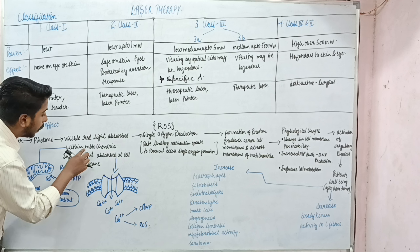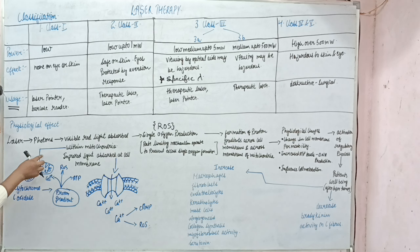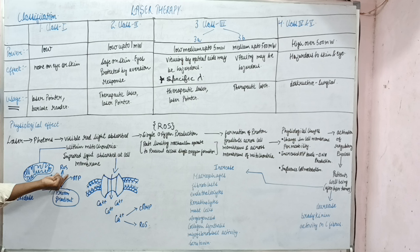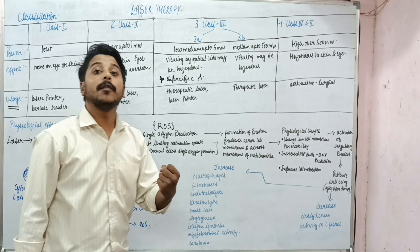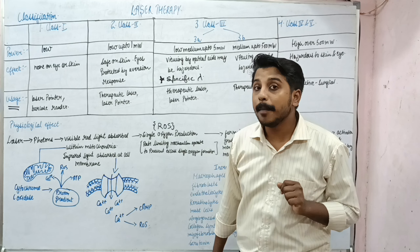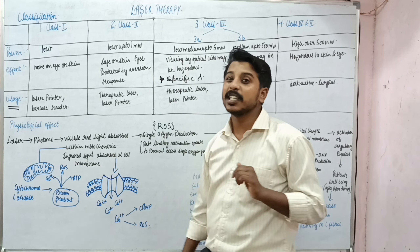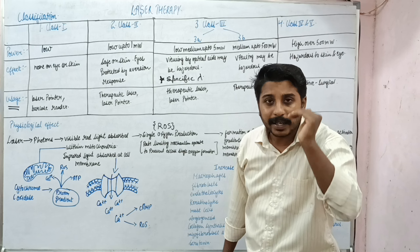Visible red light is absorbed within the mitochondria — it enters our body cells and particularly enters the mitochondria. Mitochondria have cytochrome c oxidase, which forms a proton gradient to produce calcium 2+, reactive oxygen species (ROS), and ATP. All three are very useful: ATP is important for energy production, calcium 2+ regulates cell membrane permeability and also acts as a second messenger, and ROS are produced in small amounts where they are effective.